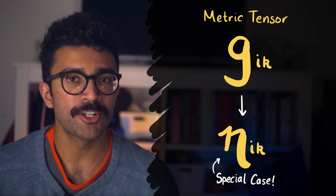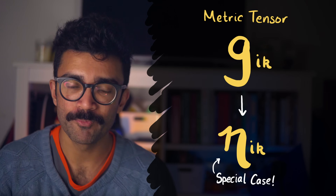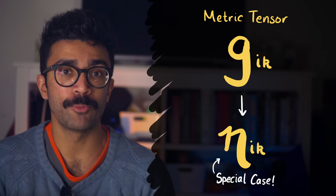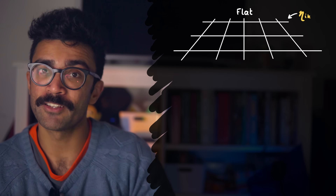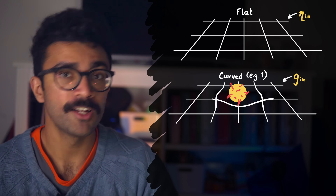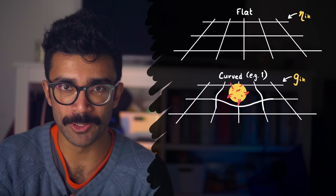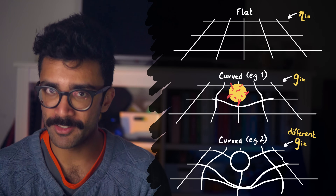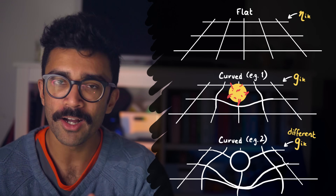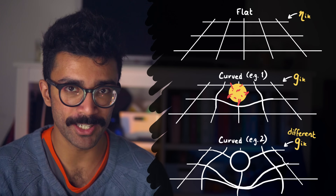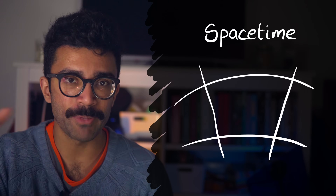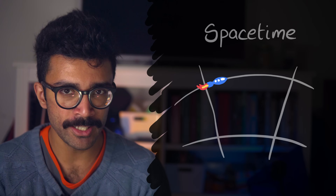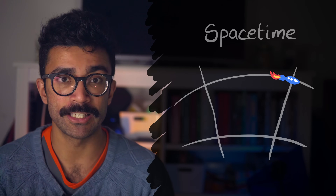The metric essentially encodes what kind of spacetime we are working with in any given scenario. The metric looks different if we're working with flat spacetime, or if it's curved in some specific way, the metric tensor will look different again. So the metric allows us to determine how distances, angles, and time work in the spacetime that we're theoretically working with. The whole point of the spacetimes we work with is that they determine how objects embedded within those spacetimes will behave and interact with each other.